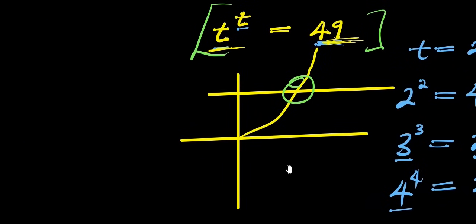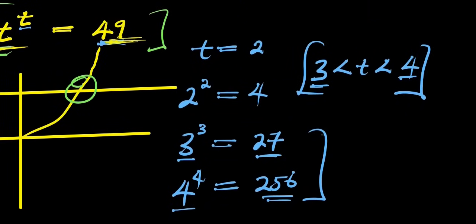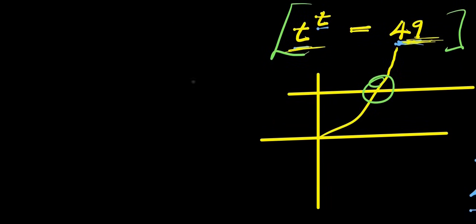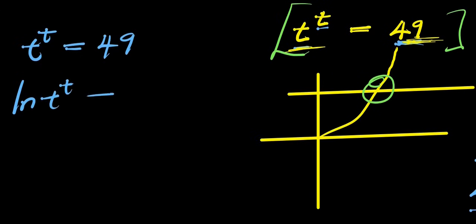We need to solve for that particular solution. We can't just keep testing values from 3.1 up to 4.0, so we'll use natural log and the Lambert W function. Starting from t^t = 49, we apply natural log to both sides: ln(t^t) = ln(49).